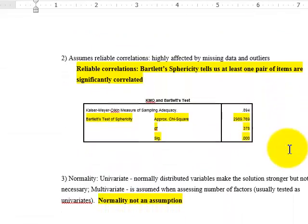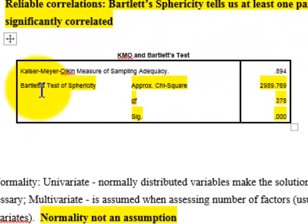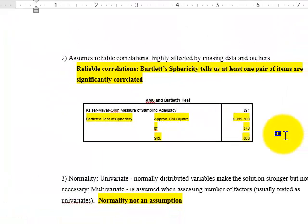And this KMO, the Kaiser-Meyer measurement of sampling adequacy, if this number was smaller than 0.5, then you would violate the assumption of sample size. But our KMO number is much bigger than needed. And the second assumption is the reliable correlation. That is the Bartlett's test of sphericity. We want this to be significant, which it is in our model here.